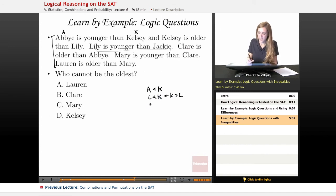Lily is also younger than Jackie, so L less than J. Claire is older than Abby, so I'm going to have to reformat that one again so that I get Abby is younger than Claire. I also have Mary is younger than Claire, so M less than C.